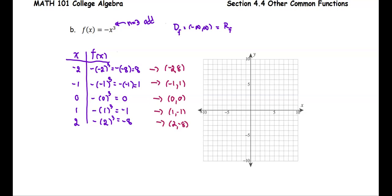On the xy plane, we're going to put the points. Negative 2, positive 8 — it's going to be up here. Then negative 1, positive 1; 0, 0; 1, negative 1; and 2, negative 8. So we're going to connect all the points with a smooth curve. And that confirms that the domain is a set of all real numbers, similar to the range, which is also a set of all real numbers.